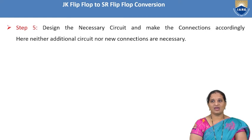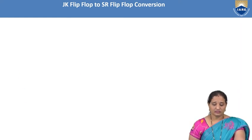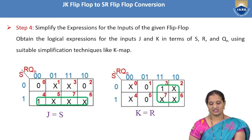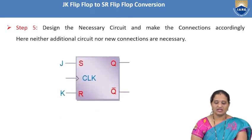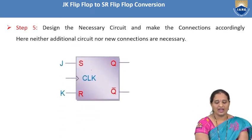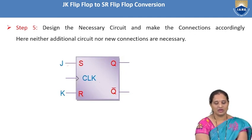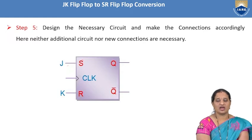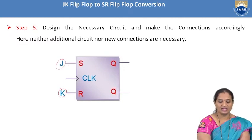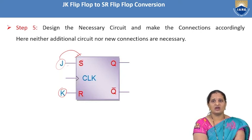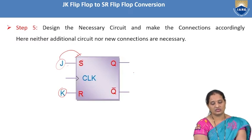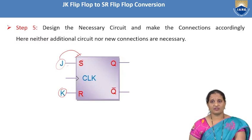Now design the necessary circuit. Since J = S and K = R, we take the JK flip-flop and connect the S input directly to J and the R input directly to K. No additional logic gates are needed. This completes the conversion of JK flip-flop into SR flip-flop.